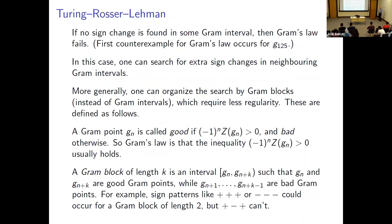Suppose we've found a list of ordinates and want to check whether the Riemann hypothesis is true in that interval. This is addressed by an amazing method due to Turing, Rasser, and Lehman — it came in stages.